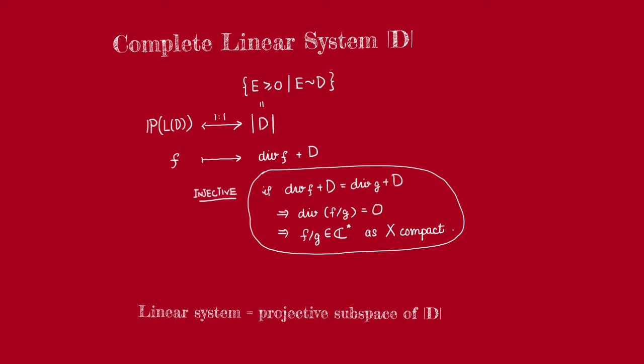How do we get a projective structure on it? Well, there's a natural bijection between this complete linear system and this projective space. Given any function f in L(D), we can associate to it the divisor div(f) + D. Because by definition of L(D), div(f) + D must be effective.